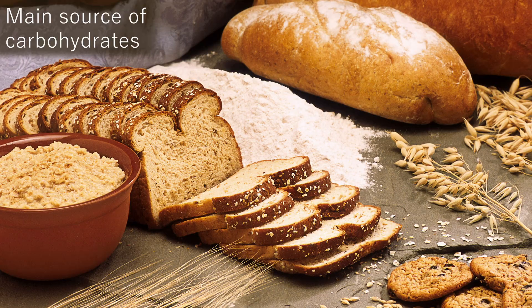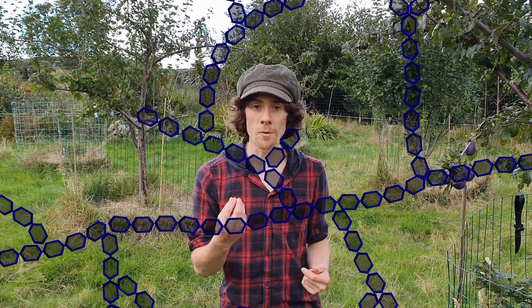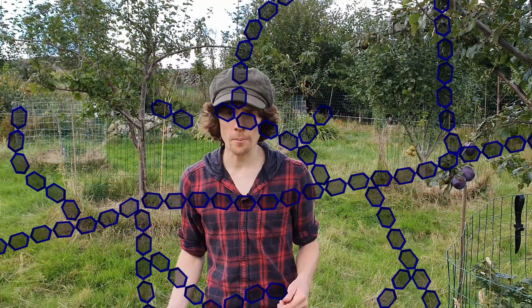Our modern-day diets are full of complex carbohydrates, with health recommendations that around half our calories come in the form of carbs. Nearly all of our main high-carbohydrate foods come from grasses: bread, pasta, noodles, rice, oats, wheat, corn, rye, barley. The only main exception is potato-based products such as chips, fries, or mashed potato. These large chains of sugars are slowly broken down by the body over a long period of time.